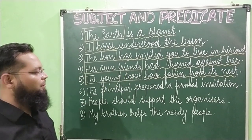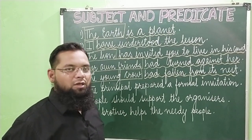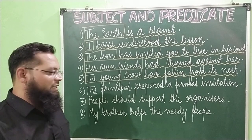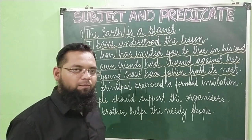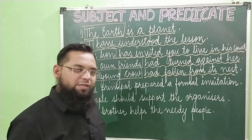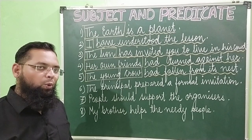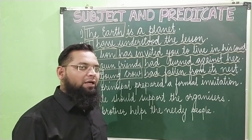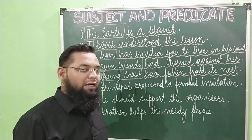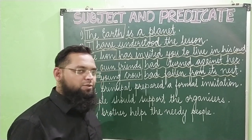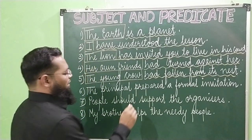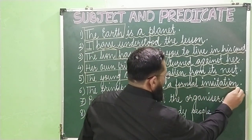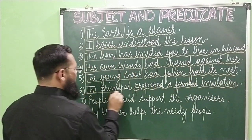The next example: 'The principal prepared a formal invitation.' What is the helping verb in this sentence? There is no helping verb given. So where will the predicate begin? The predicate will begin with the verb. The verb is 'prepared.' So 'prepared a formal invitation' is the predicate, and 'the principal' will be the subject.